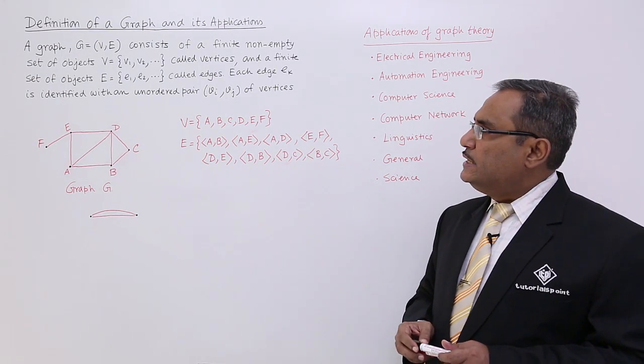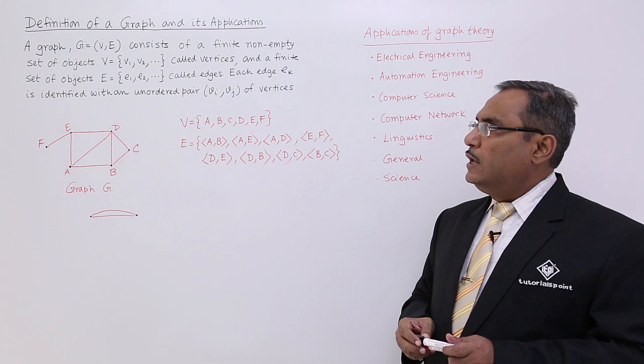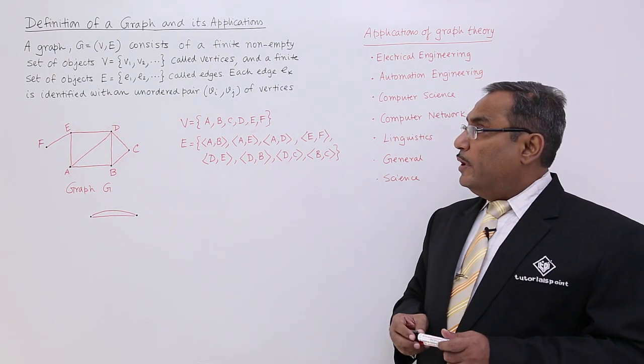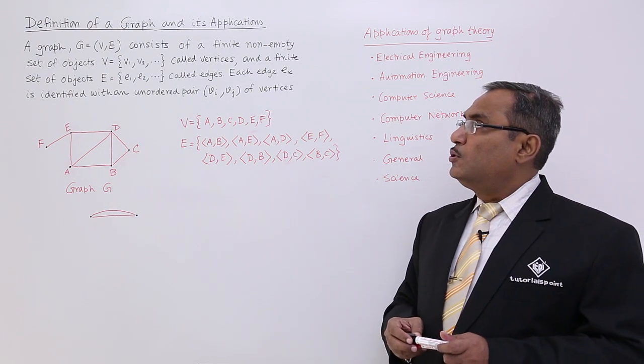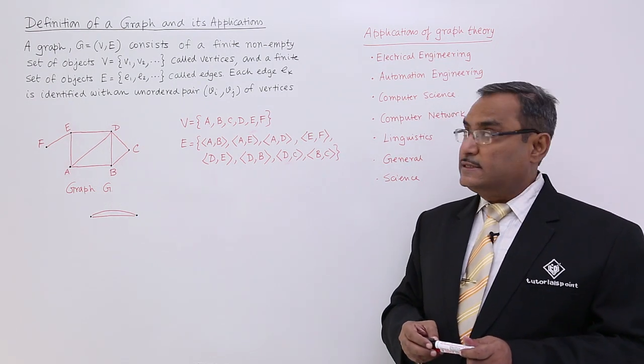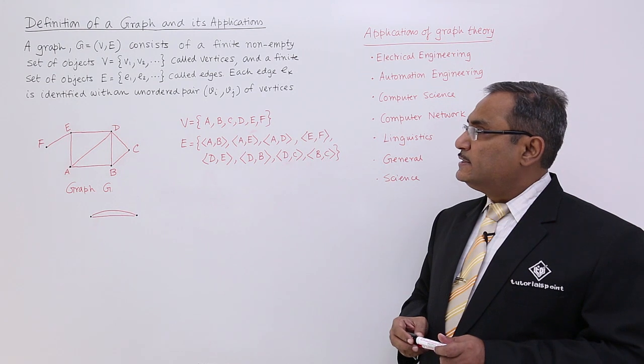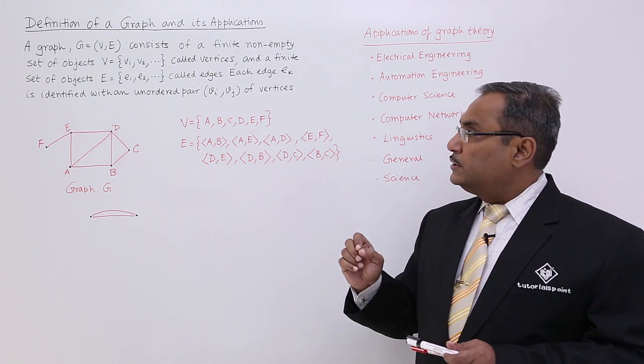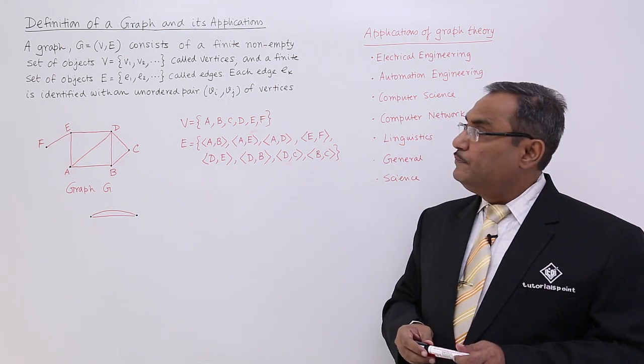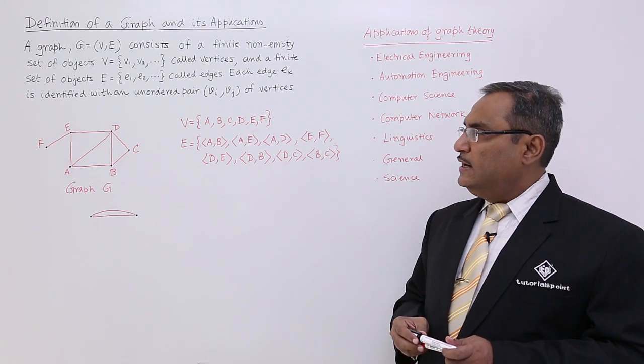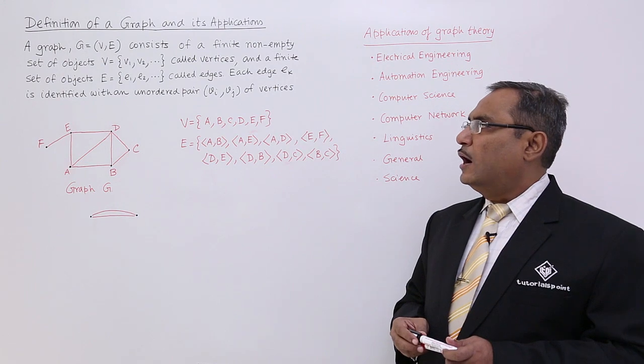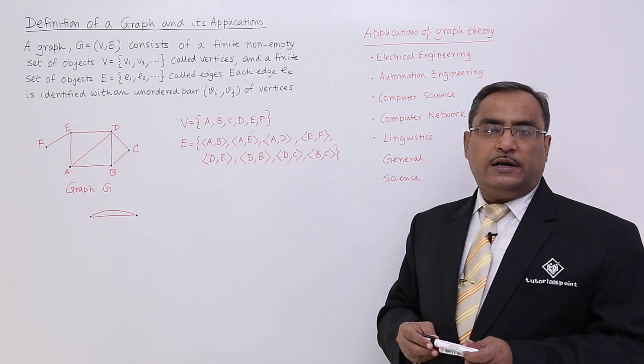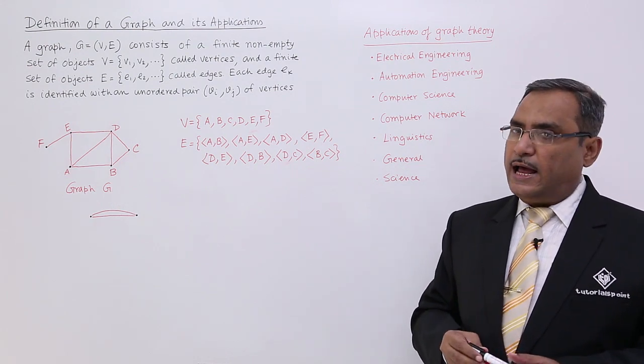A graph G equals V, E consists of a finite non-empty set of objects, where V equals V1, V2, et cetera called vertices, and a finite set of objects E that is E1, E2, et cetera called edges. Each edge Ek is identified with an unordered pair Vi and Vj of vertices. So this is known as a graph.